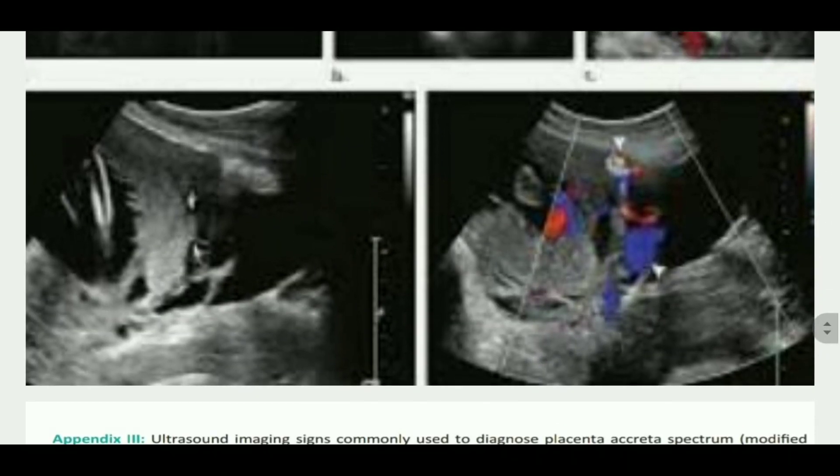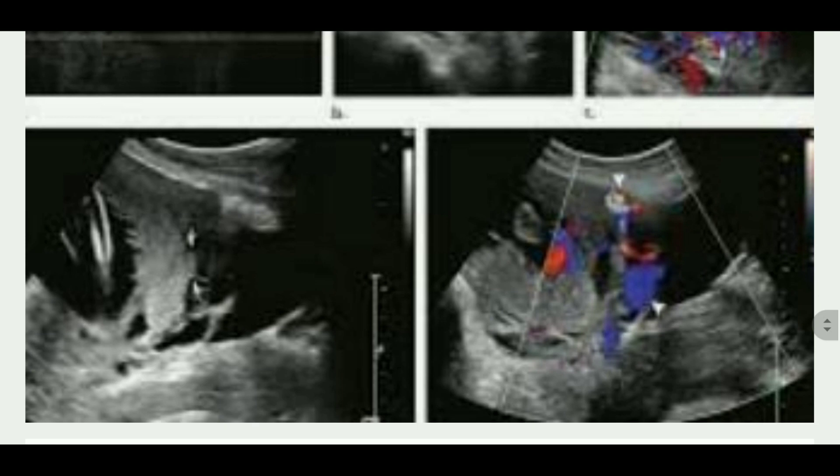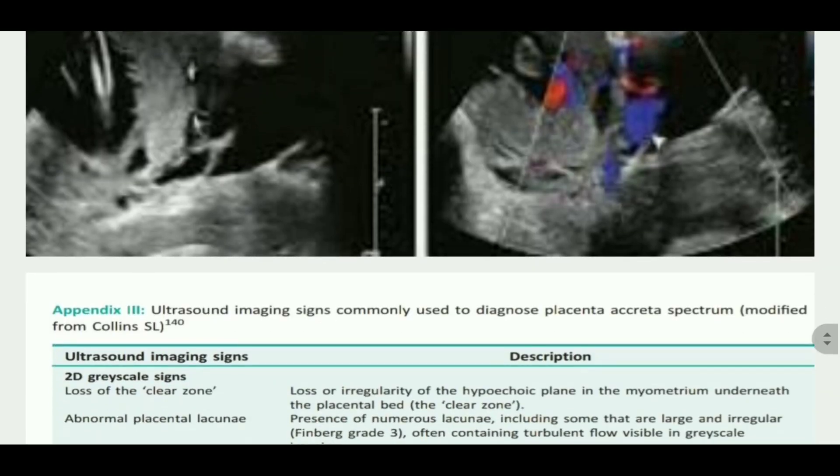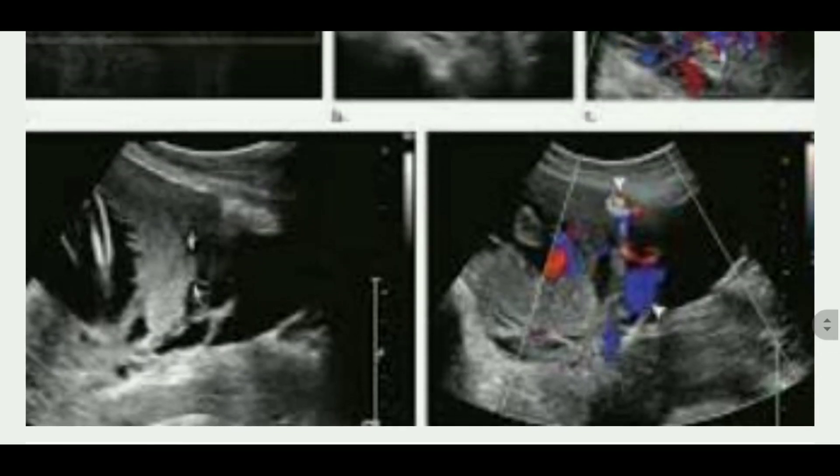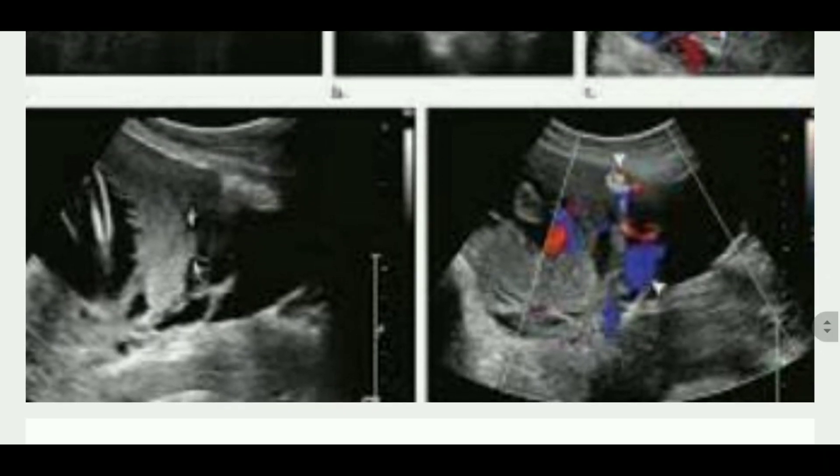The 3D color Doppler signs show intraplacental hypervascularity, characterized by a complex and irregular arrangement of numerous placental vessels.